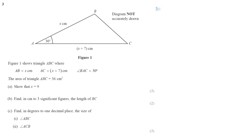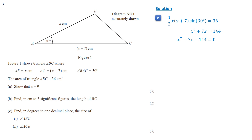In this question, we use the formula for the area of a triangle: half times x times (x + 7) times sine 30 equals 36. Since sine 30 is half, we multiply both sides by 4. Simplifying gives the quadratic equation x squared plus 7x minus 144 equals 0. We factor it as (x + 16)(x − 9) = 0. Since length is always positive, we take x minus 9 equals 0, so x equals 9.